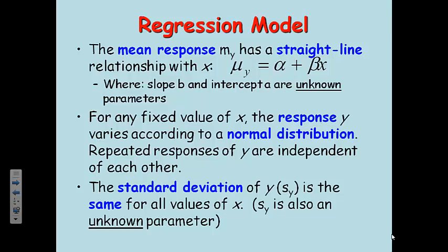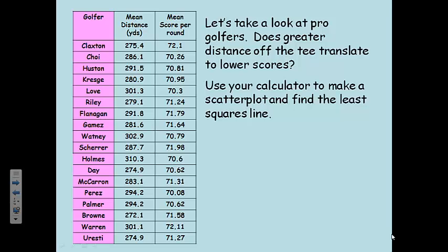The third thing is the standard deviation has to be the same for all values. S sub y, the standard deviation of y, is also an unknown parameter. To build a regression model, it has to be a straight line, it has to vary according to a normal distribution, and the standard deviation of y has to be the same for all the values. So, let's take a look at pro golfers. Does greater distance off the tee translate to lower scores? On your notes, you have this same exact little spreadsheet here. I'm going to do this for you, I'm going to put all of these numbers into the calculator. Hopefully, you remember how to do this on your TI-84, because we did this a while back.